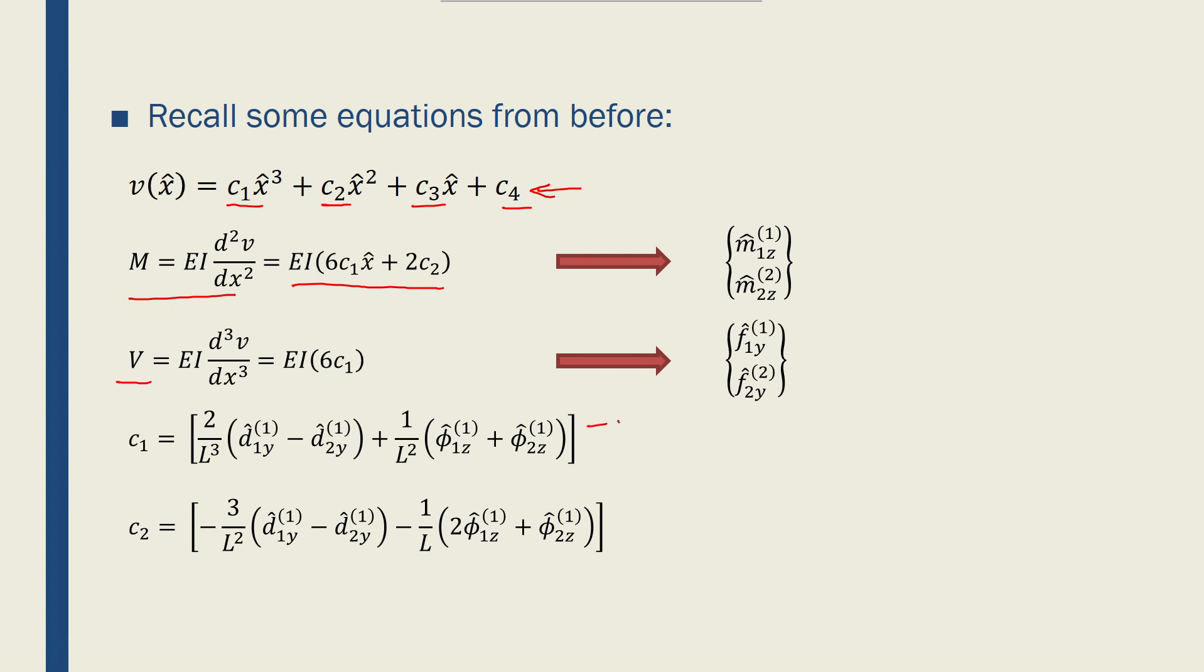And then we also had c1 and c2 in terms of d1y, d2y, phi1z, and phi2z. That would be placed here, here, and here.